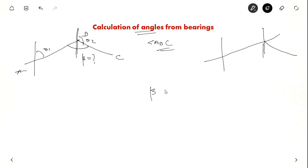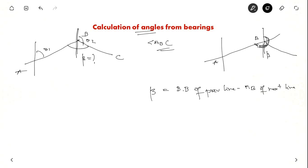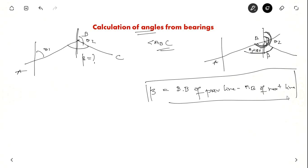Beta equals the back bearing of the previous line minus the fore bearing of the next line. So here, beta equals back bearing of line AB, which is theta 1 plus 180 in this case, minus the fore bearing of the next line BC, which is theta 2. So this is the formula to be used for calculating angles from bearings.